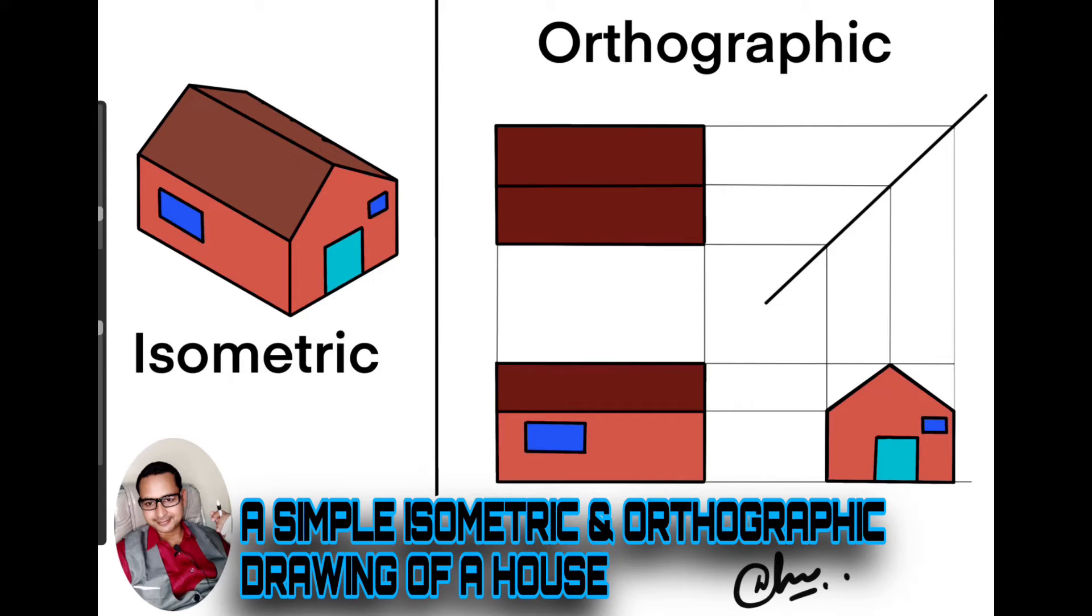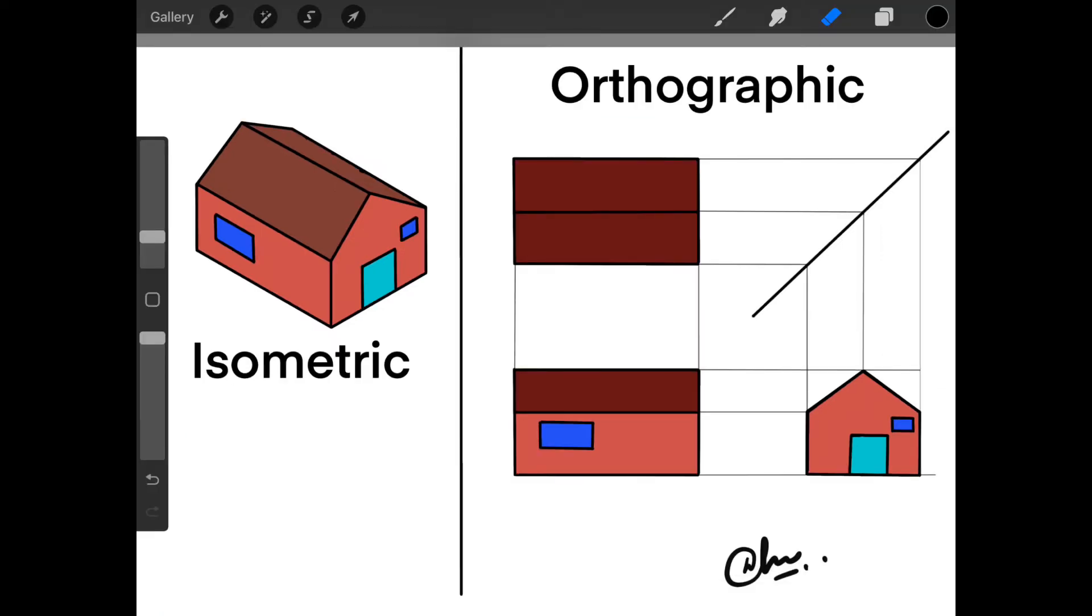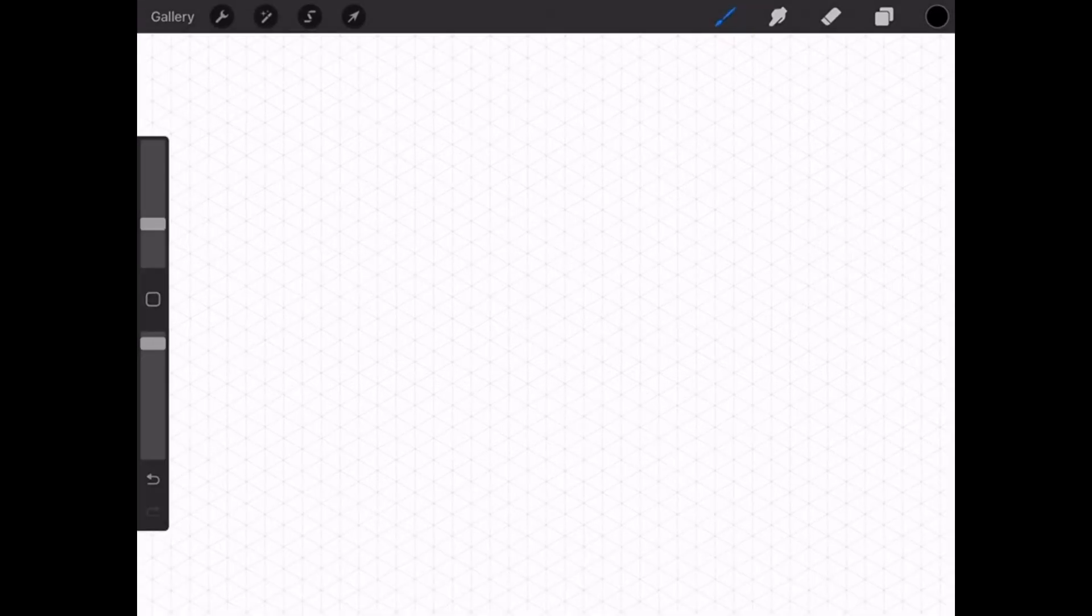Hi Dasher, welcome to my new video. Today I'm going to show you how to draw a simple isometric and orthographic drawing of a house. So let's start. First, open Procreate and set up an isometric drawing grid.